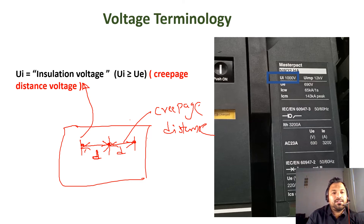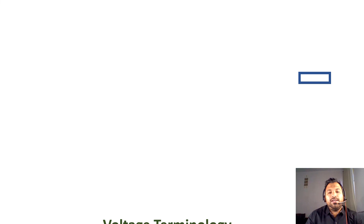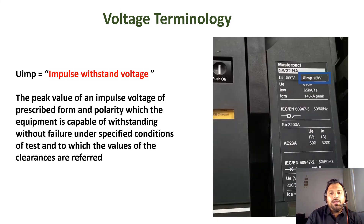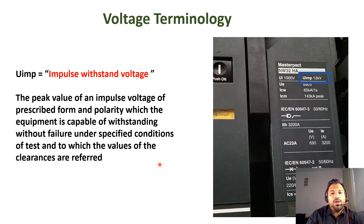The next terminology is Uimp — the impulse withstand voltage. In a system we have two types of impulses: current impulse and voltage impulse. The impulse voltage is the peak value of an impulse voltage of prescribed polarity that the equipment is capable of withstanding without failure under specified conditions. On this circuit breaker, the impulse voltage is shown as 12 kV — meaning the breaker can withstand a 12 kV voltage impulse during operation without tripping. Beyond that, it may trip or be damaged.